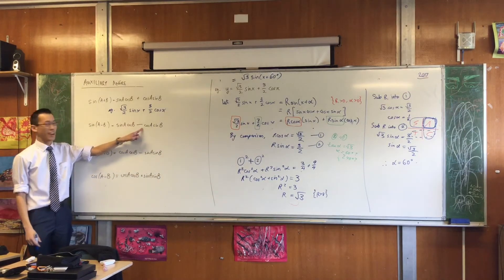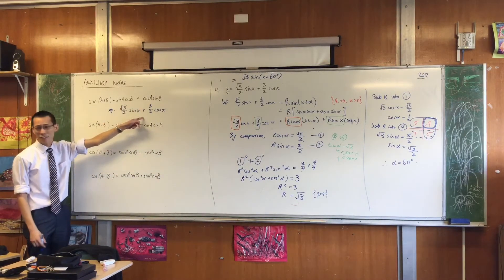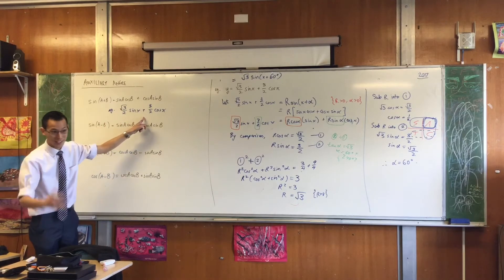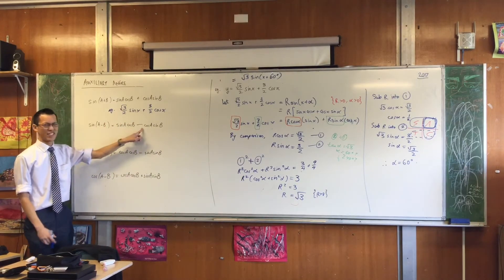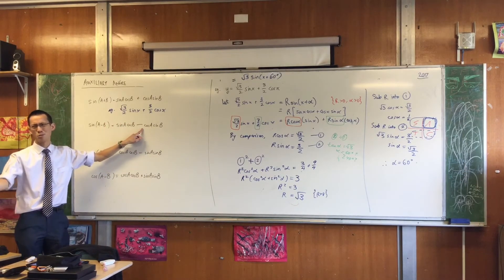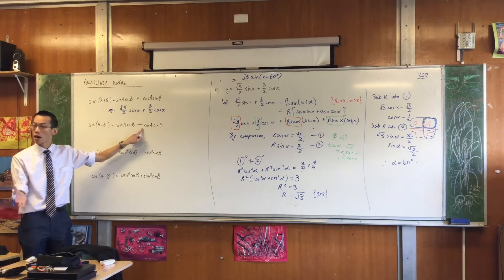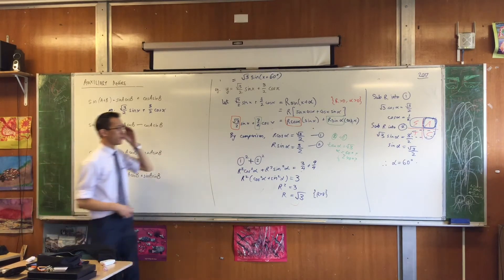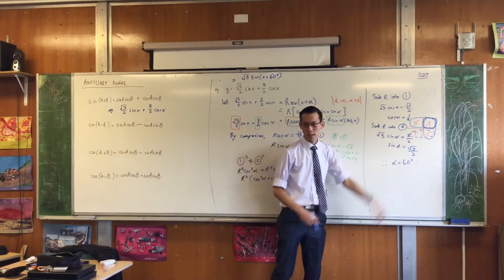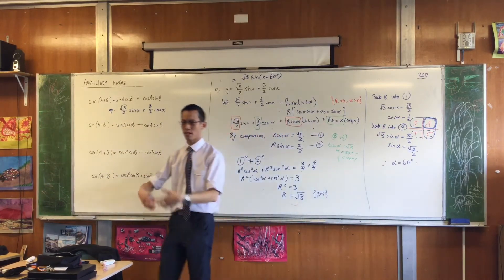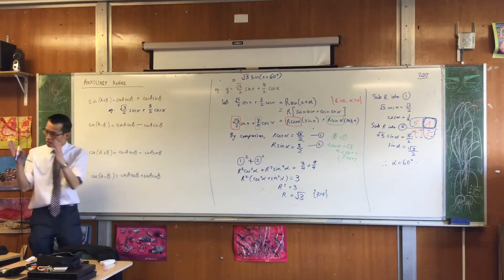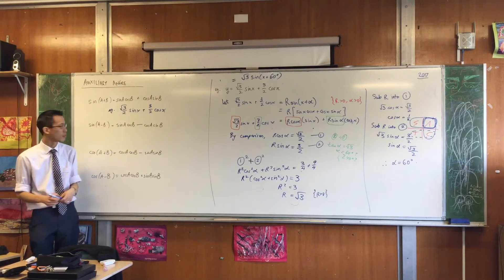When you expand this, you get a minus sign there, and the question doesn't have a minus sign there. Now, if you wanted, you could choose this and then just have a double negative, but why would you do that? You're just making life harder for yourself. Not only do you get a double negative, but you'll find that these angles that you get over here, they end up getting bigger and bigger, and it's just needless. Smaller equals nicer and easier to work with.